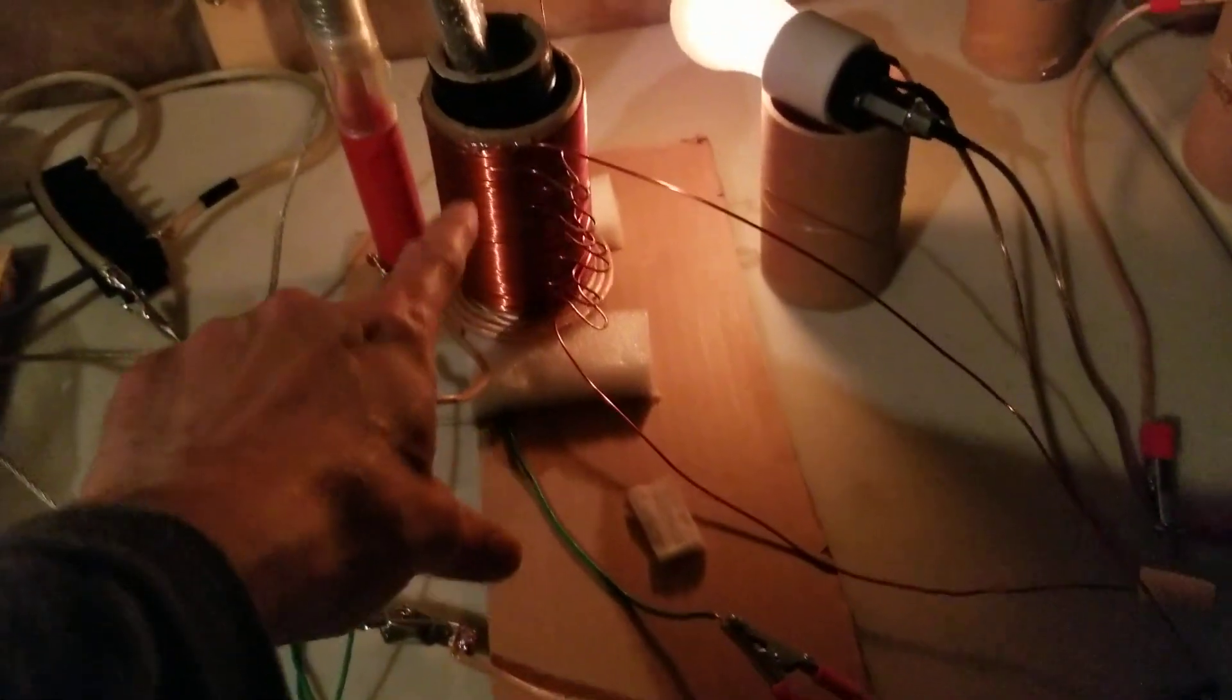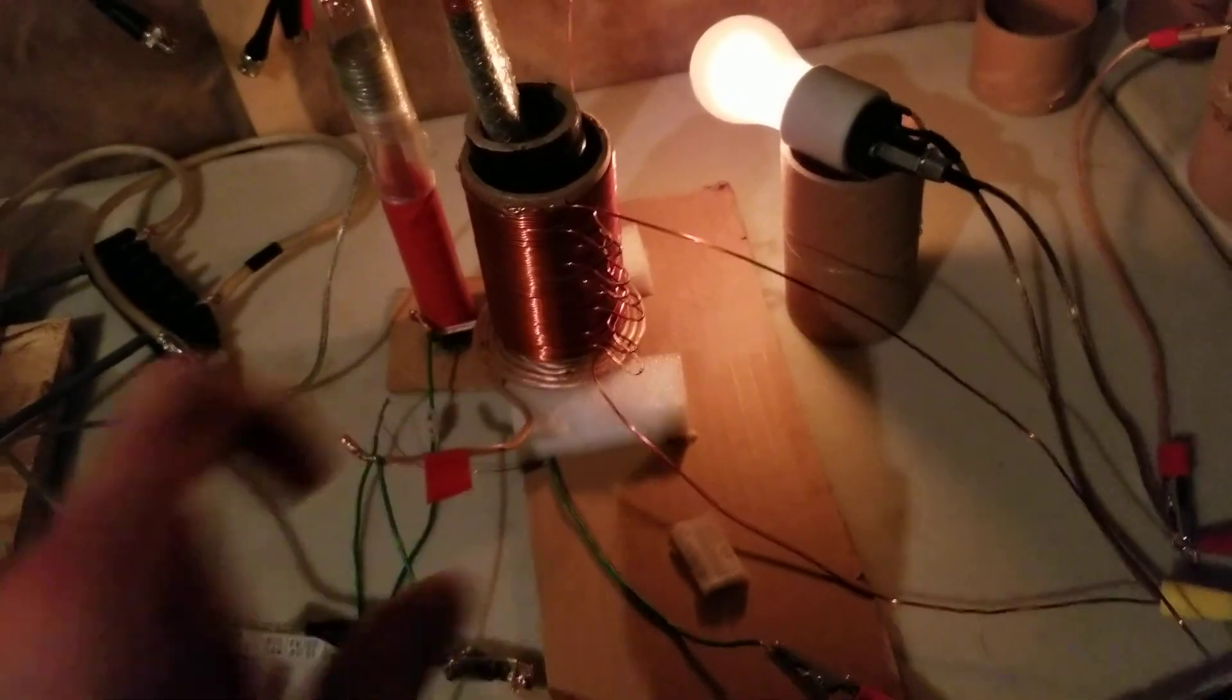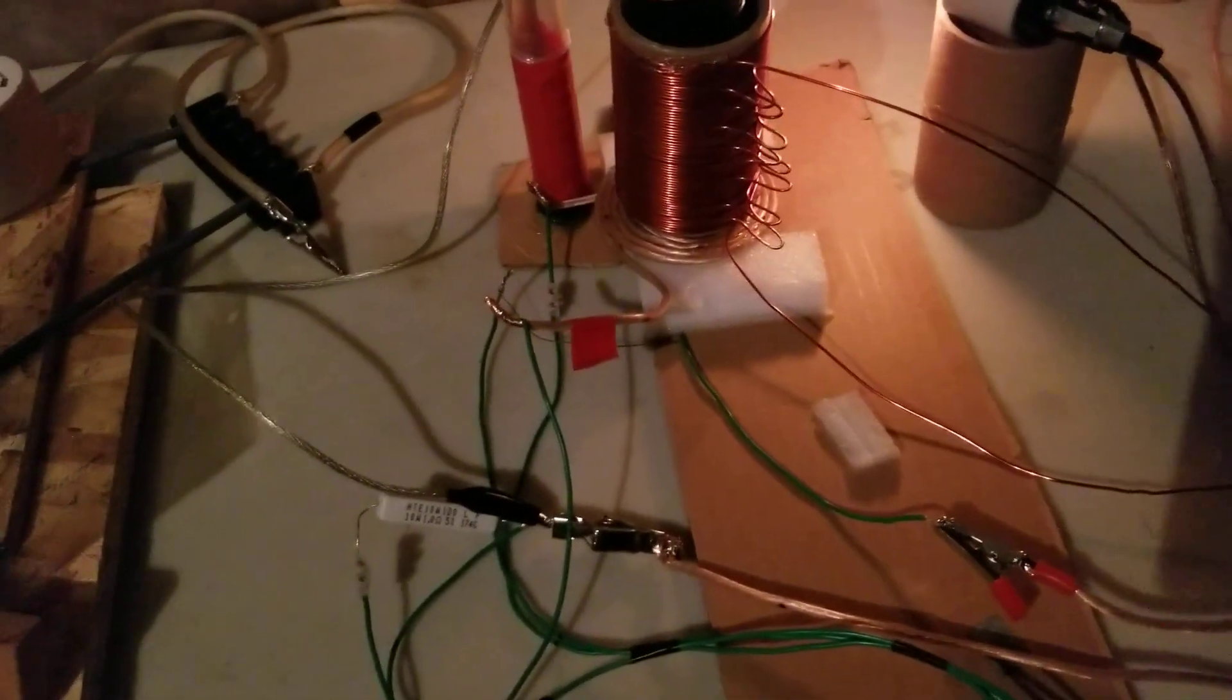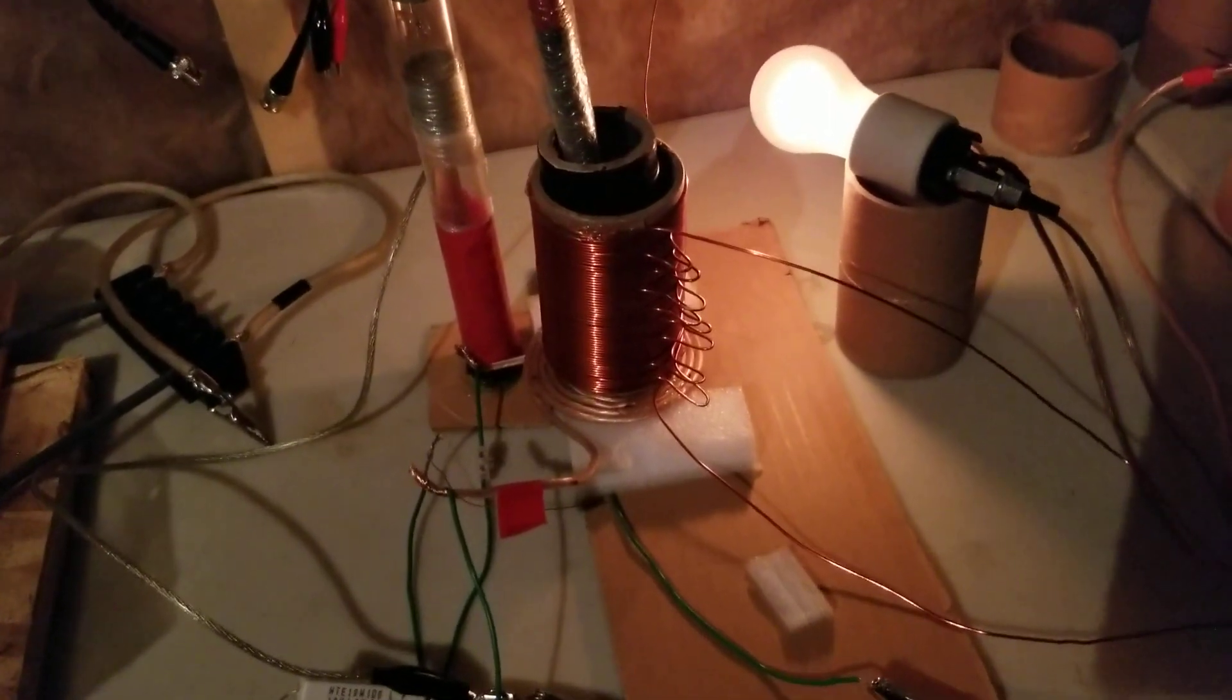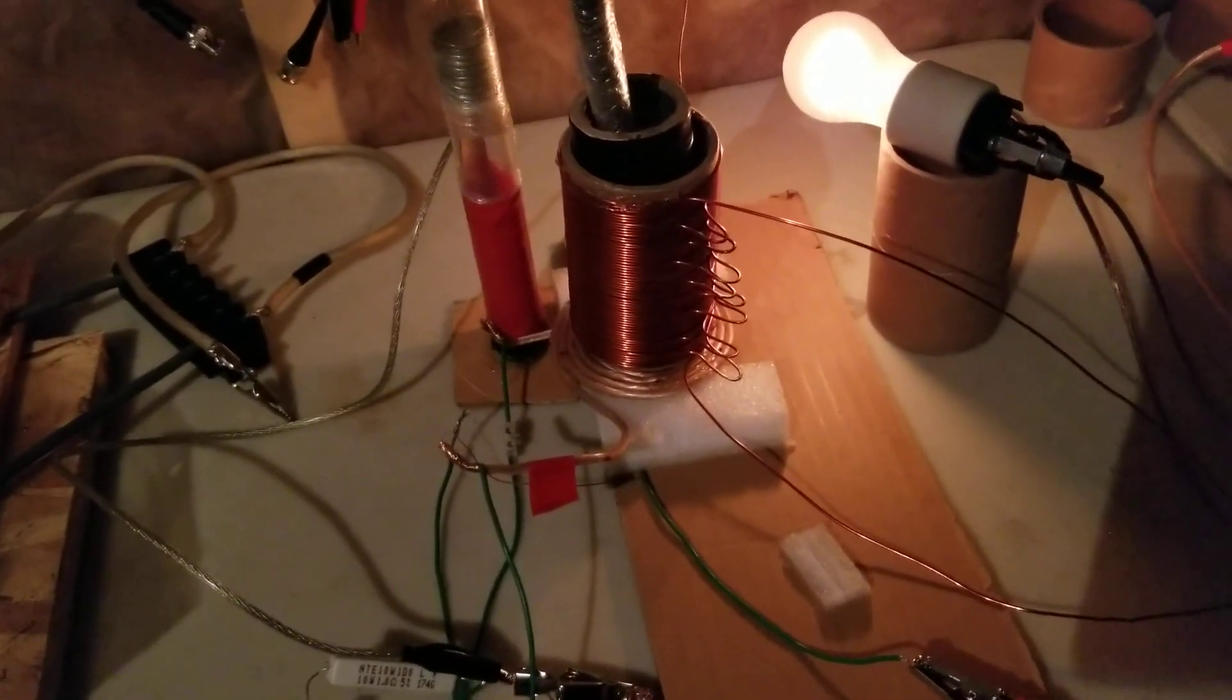There's about 60 turns on this output coil. The Tesla coil resonates about 833 kilohertz.